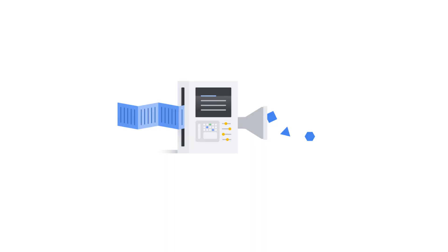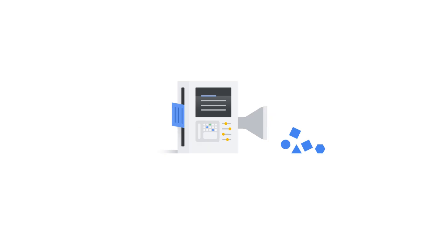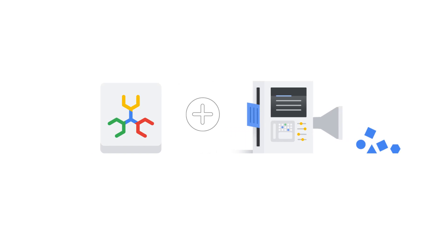Large language models, or LLMs, are another key consideration for database choices. LLMs require efficient storage and retrieval of massive text data. A database like Spanner is a great choice for this use case, as it's ideal for handling large-scale, globally distributed data.